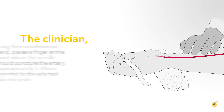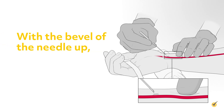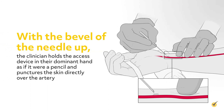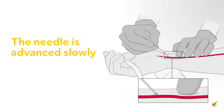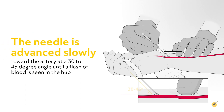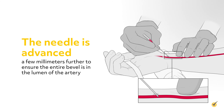The clinician, using their non-dominant hand, places a finger at the point where the needle should puncture the artery, approximately 5 to 10 millimeters proximal to the selected skin entry site. With the bevel of the needle up, the clinician holds the access device in their dominant hand as if it were a pencil, and punctures the skin directly over the artery. The needle is advanced slowly toward the artery at a 30 to 45 degree angle until a flash of blood is seen in the hub. The needle is advanced a few millimeters further to ensure the entire bevel is in the lumen of the artery.